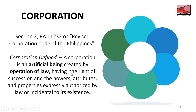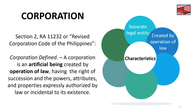Having the right of succession and the powers, attributes, and properties expressly authorized by law and incidental to its existence — the law is always incorporated in there. As a recap on characteristics: separate legal entity — its personality is separate from its incorporators, shareholders, or members. Created by law: unlike a partnership which can be formed by oral or written agreement, a corporation is legal and existing only on a written document registered with the SEC.